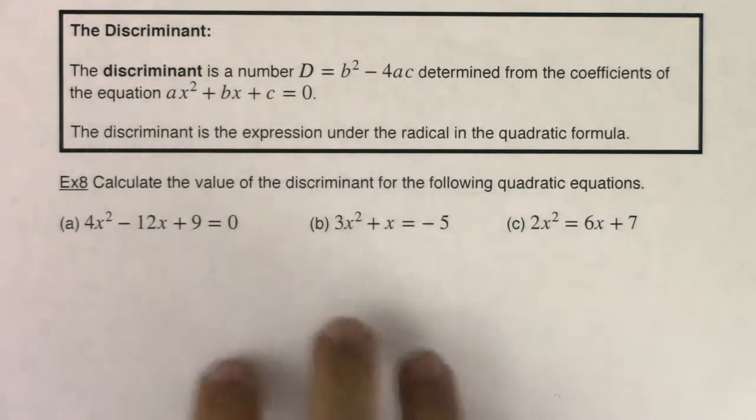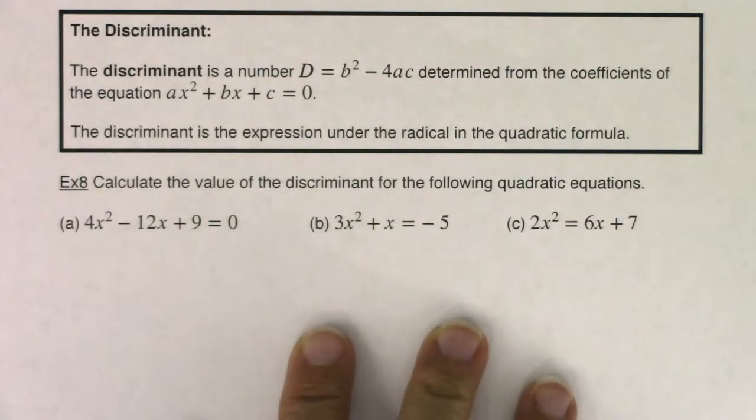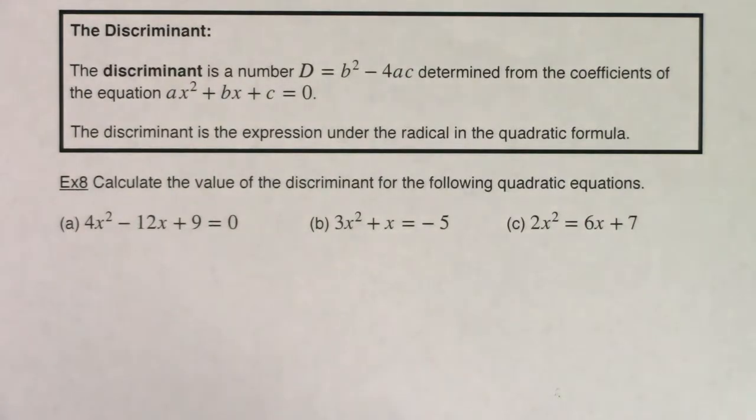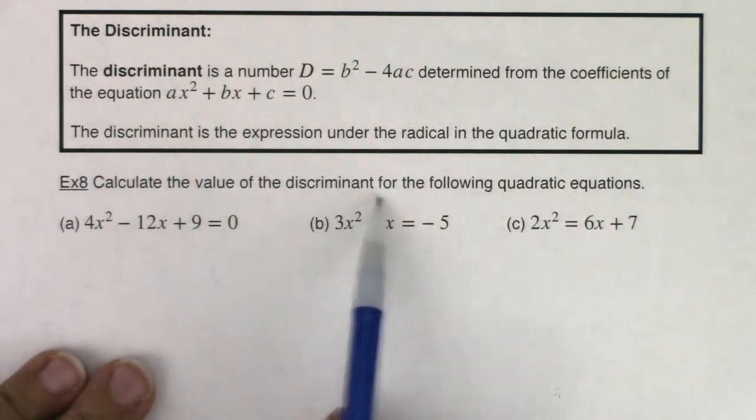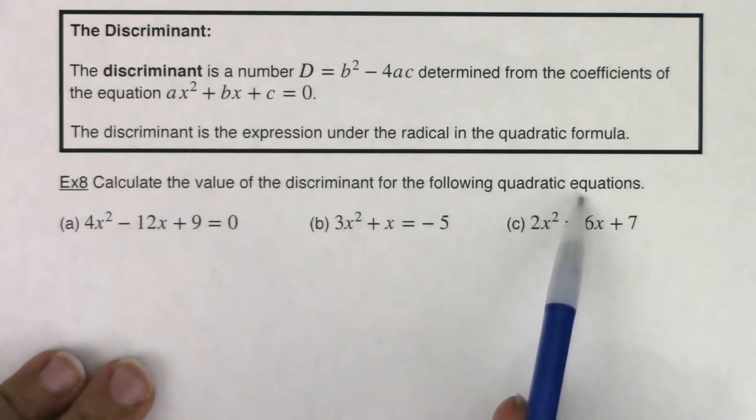So we're going to practice in example 8 just calculating the discriminant. And then in example 9, I'm going to talk about what the discriminant tells you about the number and the type of solutions that a quadratic equation would have. So in example 8 is calculate the value of the discriminant for the following quadratic equations.